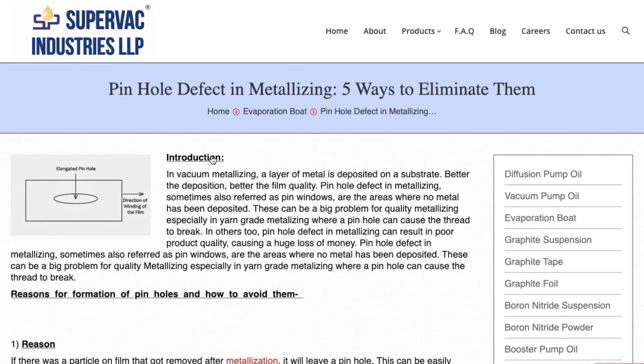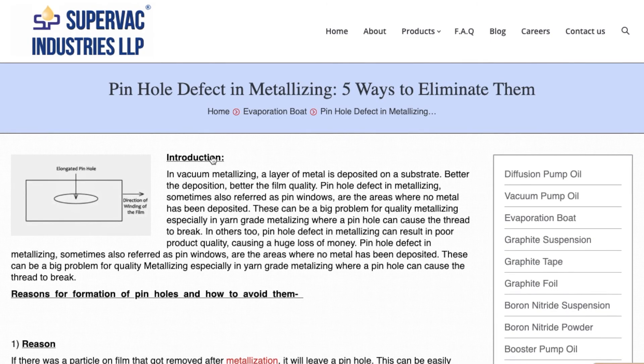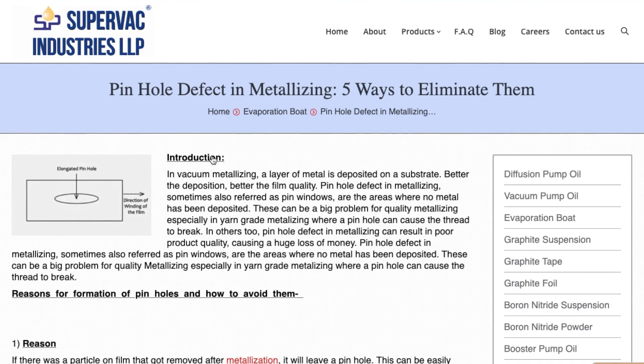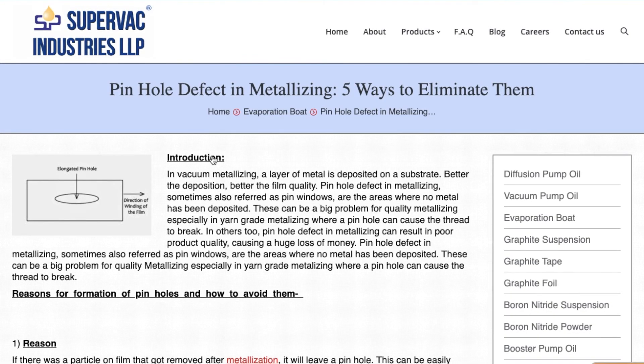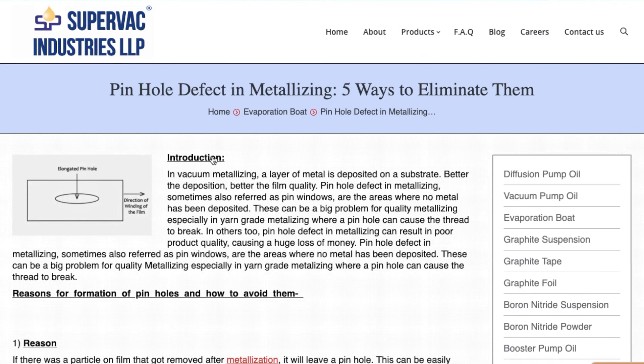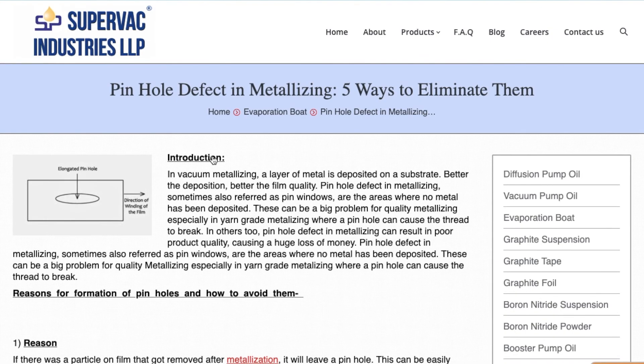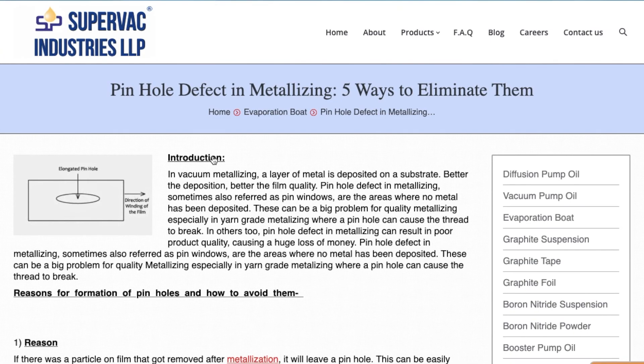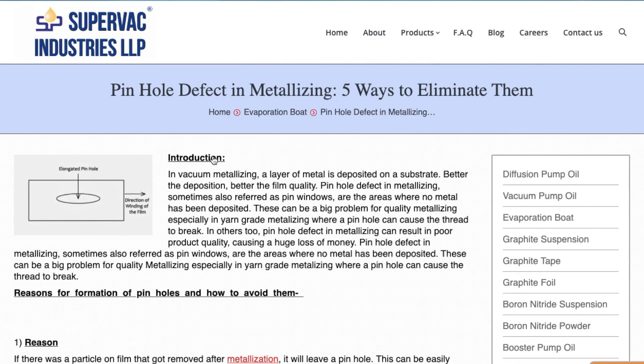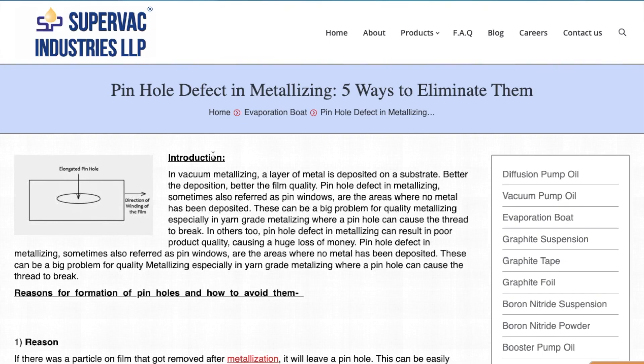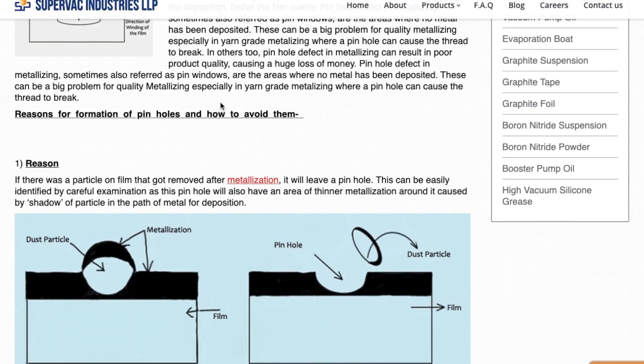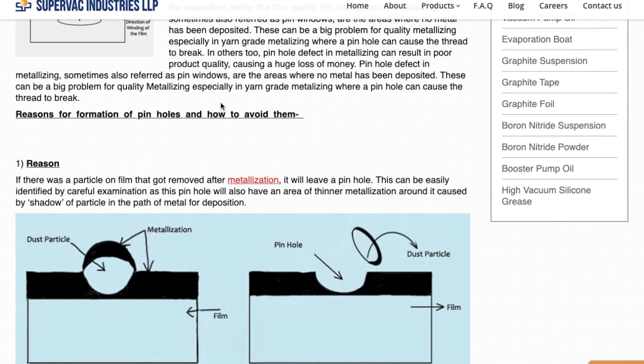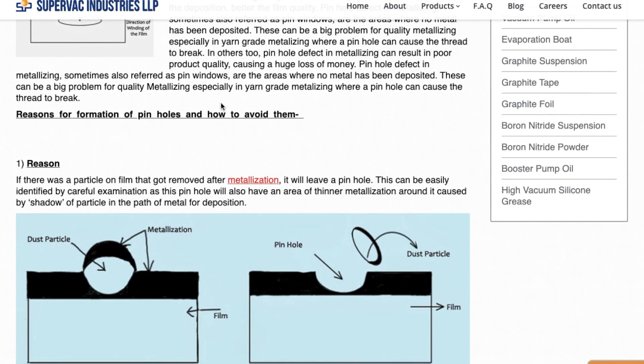So let's go on with the subject. Pinholes. As we understand, vacuum metallizing constitutes deposition of a thin metal layer on top of a substrate. So the areas where this metal doesn't deposit on the substrate are called pinholes or pin windows. As we discussed, it's a big problem in metallizing. Unless we understand the reasons that cause pinholes, we will never be able to eliminate them.